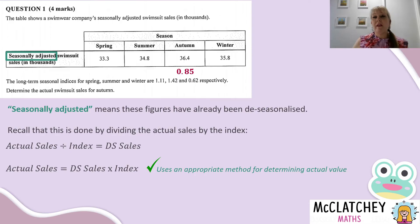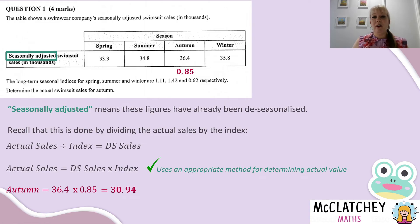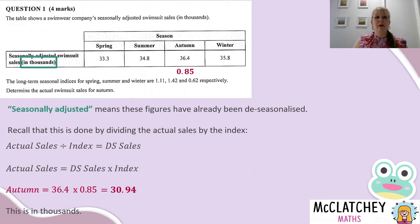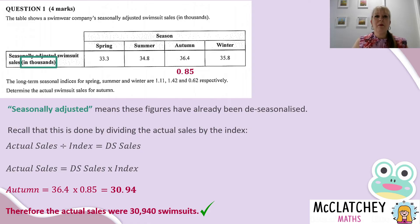Writing some sort of formula showing you're clearly multiplying and showing your working is worth your third mark. Taking the 36.4 for autumn and multiplying by 0.85 gives 30.94. Now remember, these are swimsuit sales in thousands, so you can't just write 30.94 — it doesn't make sense. You've got to multiply that by 1,000 to get the actual sales. So 30.94 times 1,000 gives us 30,940 swimsuits, and that's our fourth mark. Recognizing the thousands was an important step.